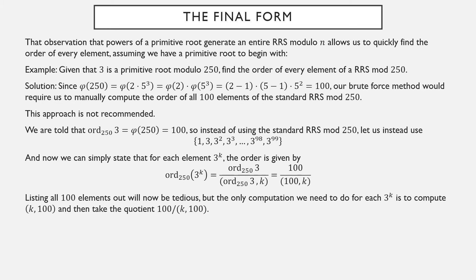Listing out all 100 elements is going to be pretty tedious, but it's not going to be hard. All I have to do is let k go from 0, 1, 2, all the way up to 99, compute this GCD, and do 100 over it. It's a very quick computation — I'm not going to do it right here just in the interest of time. But it's much easier to work in this reduced residue system of powers of a primitive root than to work in the standard reduced residue system.